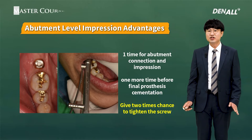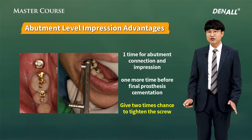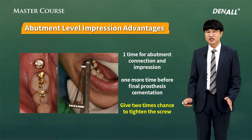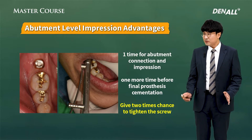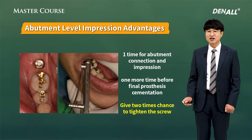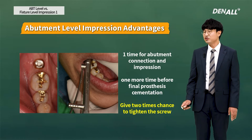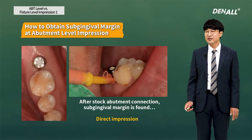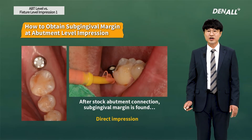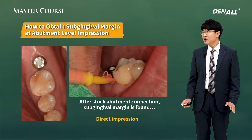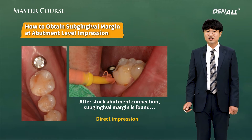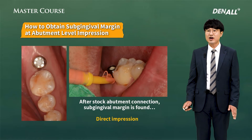Another advantage of the abutment-level impression is that the process takes about one week to complete. During that one week, the abutment stays in the mouth, giving another opportunity for screw tightening. On the first day of abutment connection, if soft tissue attachment is not complete, tightening the screw one week later gives more favorable results. Using a stock abutment for implant delivery is the first choice for many dentists. If you can use a stock abutment without modification, I use this method.